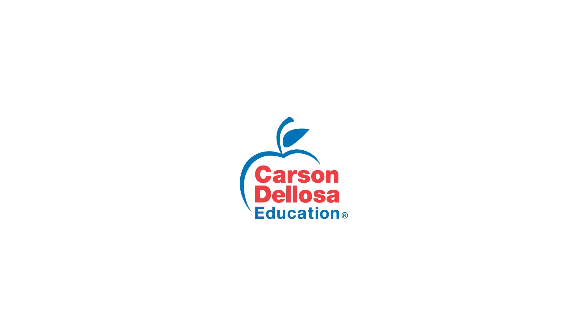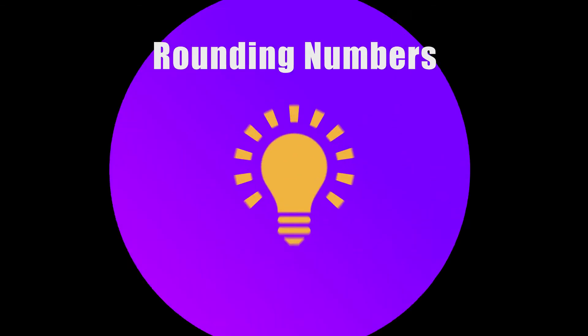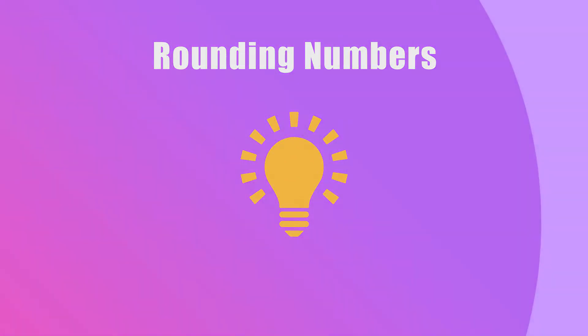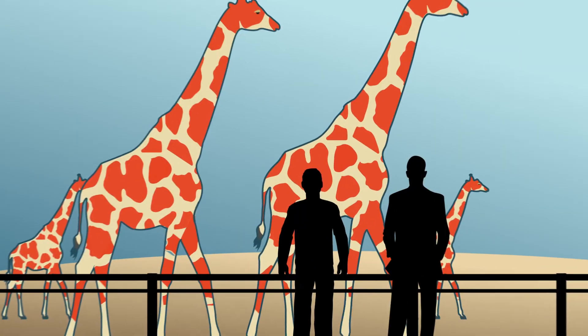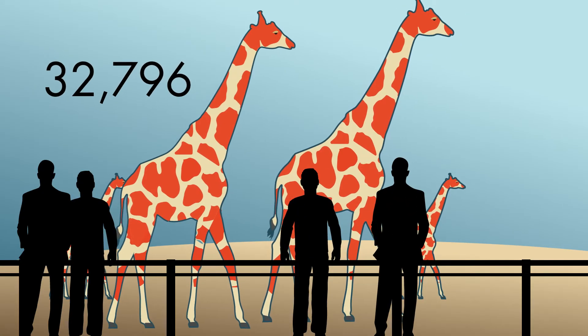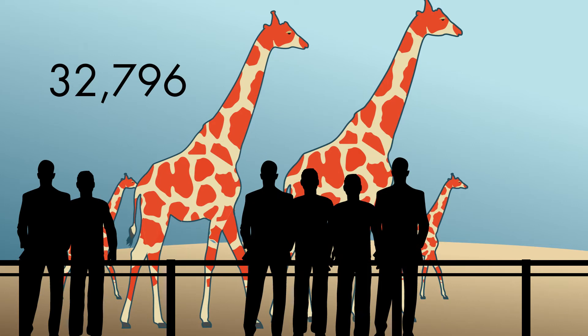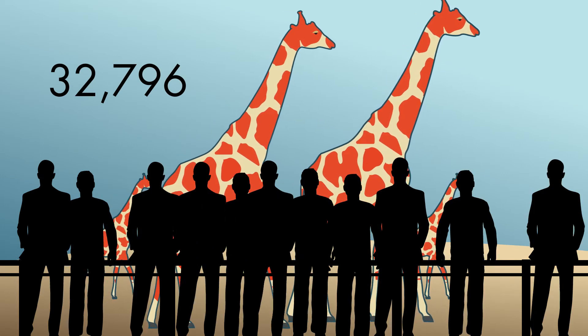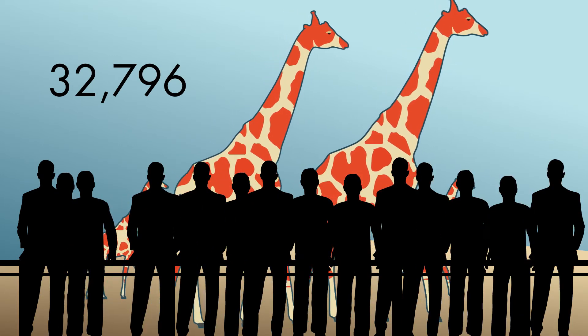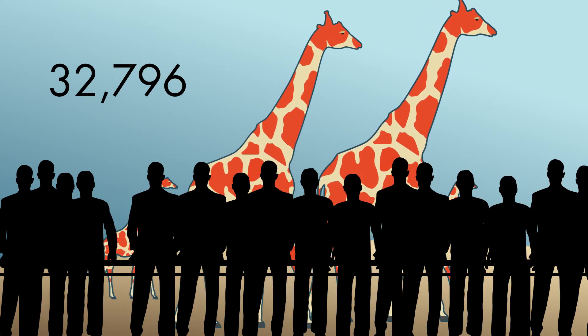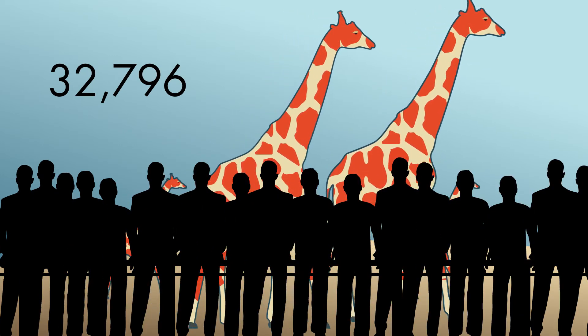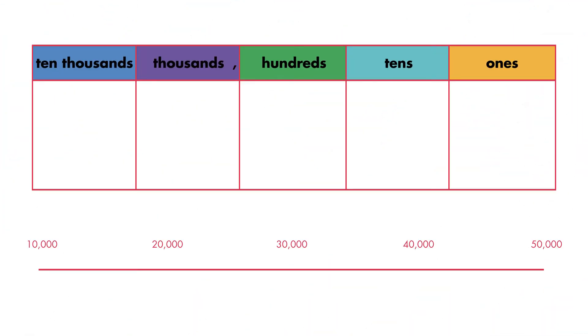In this video, we will learn how to round numbers. Imagine 32,796 people visited the zoo on Saturday. We can round this number to make it easier to work with. A number line can help us round.